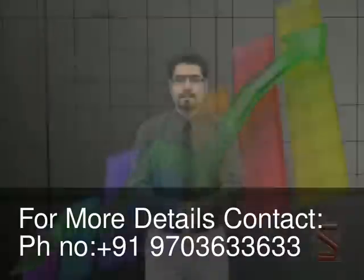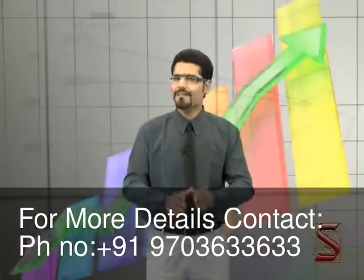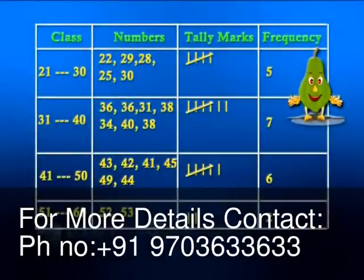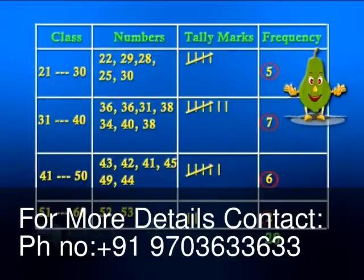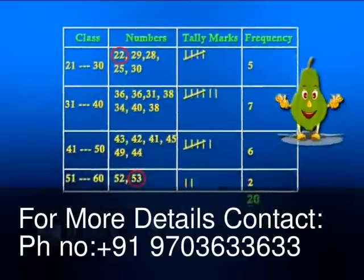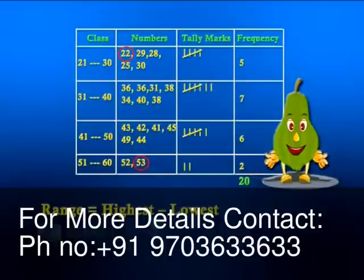The following table shows the frequency table for the botany experiment. If we add up the frequencies of all the classes, we should get back the number of scores in the data. It is very easy to spot the highest score and the lowest score by simply looking at the table — the highest is 53 and the lowest is 22. The difference between them gives us the range of the data. The range is the highest minus the lowest, so the range here is 53 minus 22, which is 31.